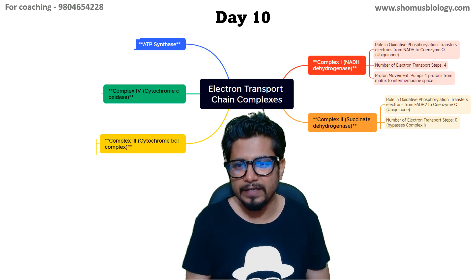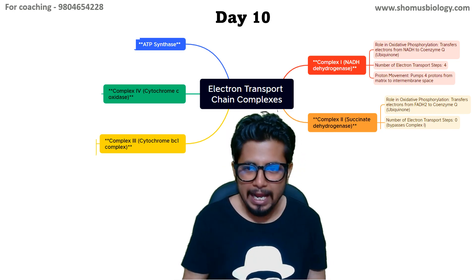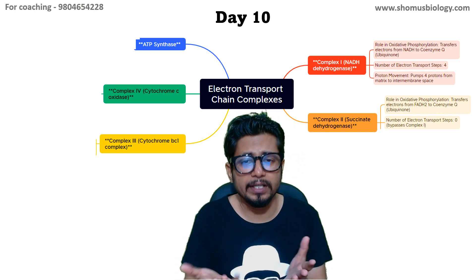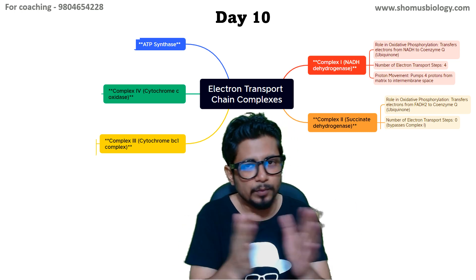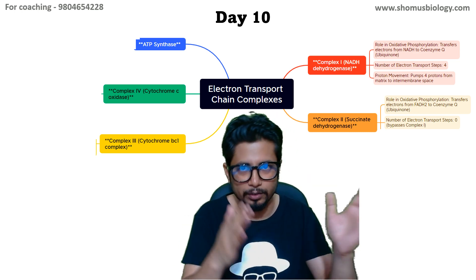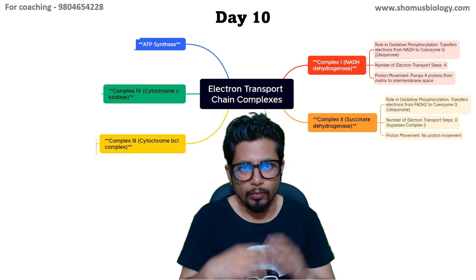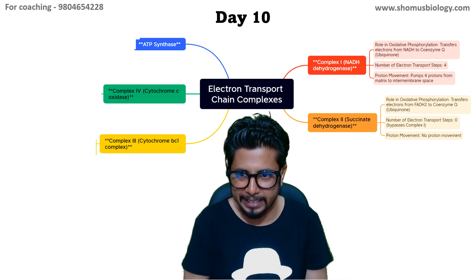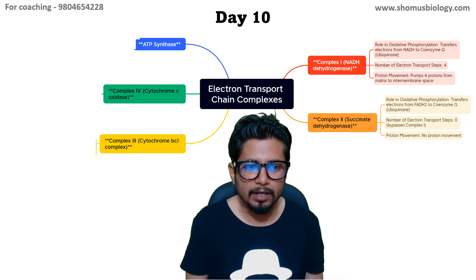The number of electrons transported from Complex I to Complex II is zero, because FADH2 starts its journey directly at Complex II. Complex I and Complex II are independent of each other, and there is no proton movement associated with Complex II.